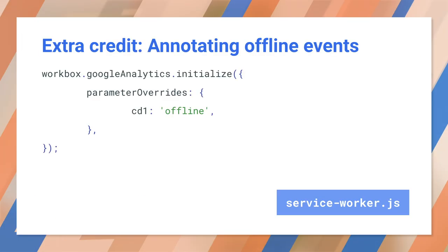Finally, here's a useful trick. When using the Google Analytics library, as shown in the previous slide, retried requests are indistinguishable from requests that succeed on the first try. This means you'll receive all the interaction data from offline users, but you won't be able to determine which interactions occurred while the user was offline.